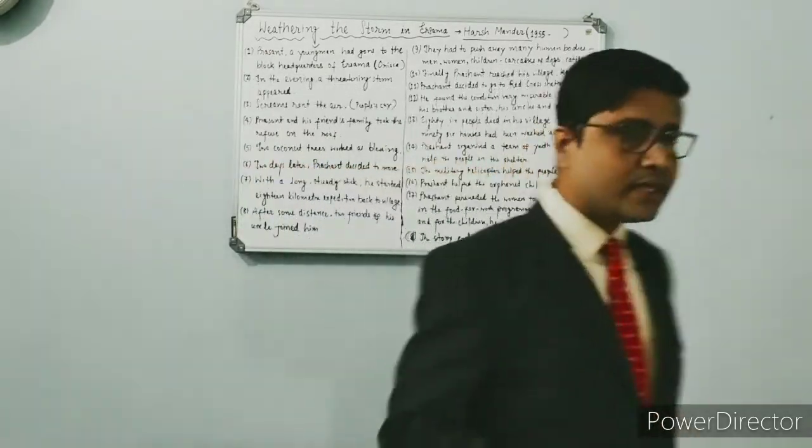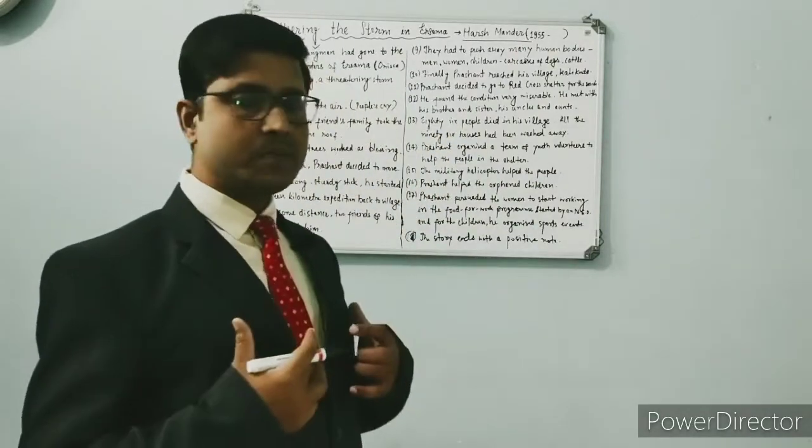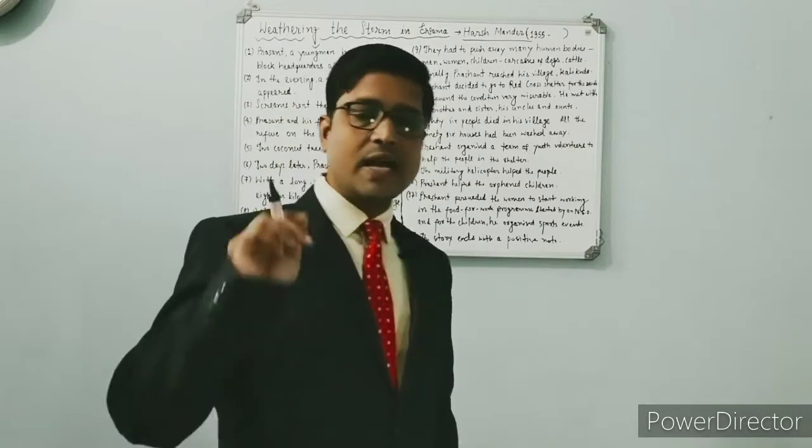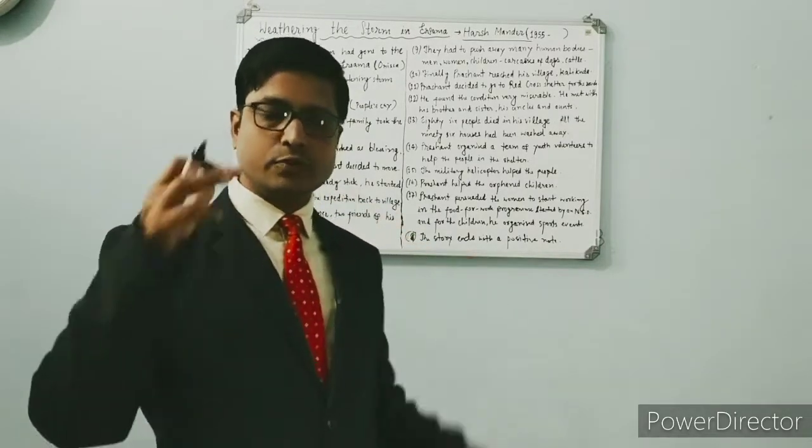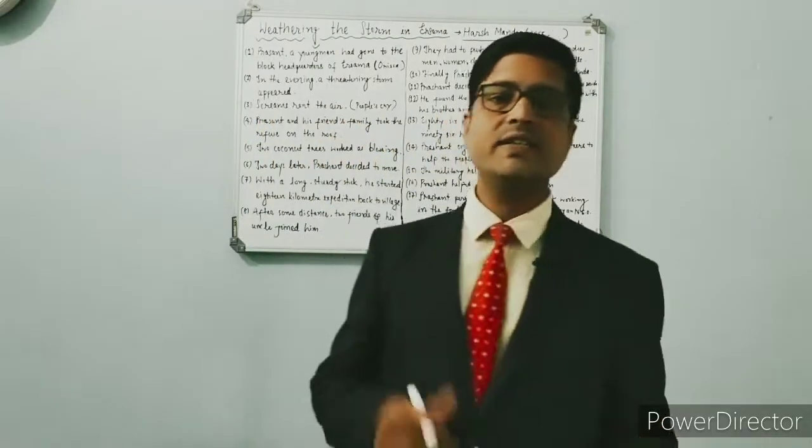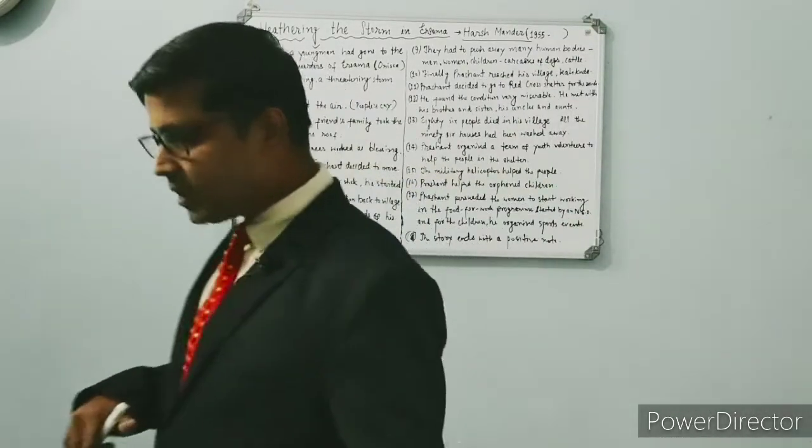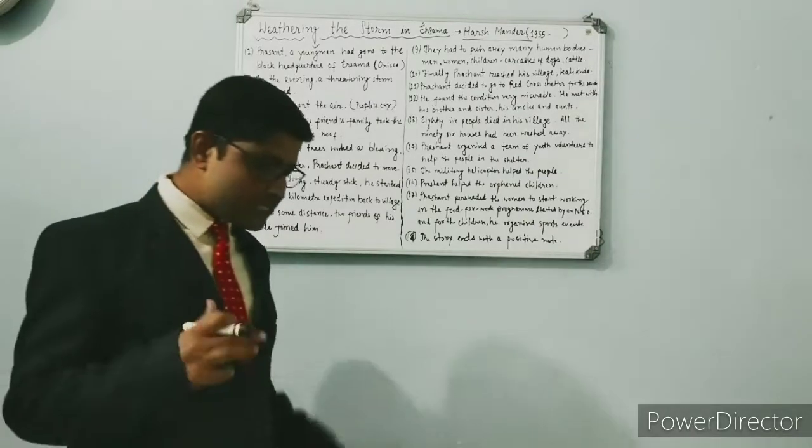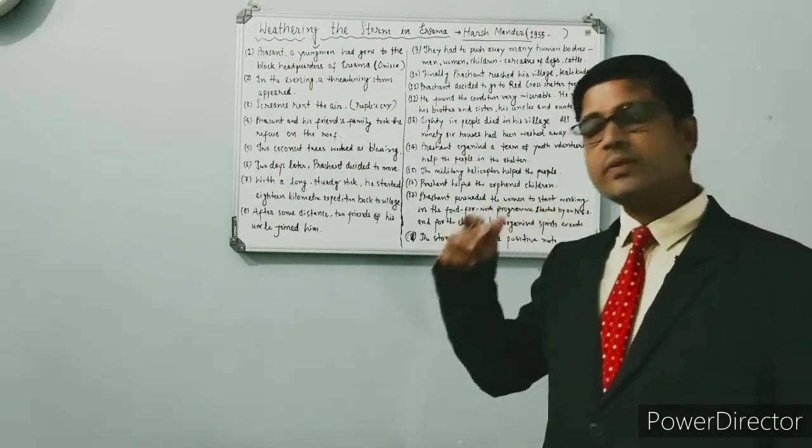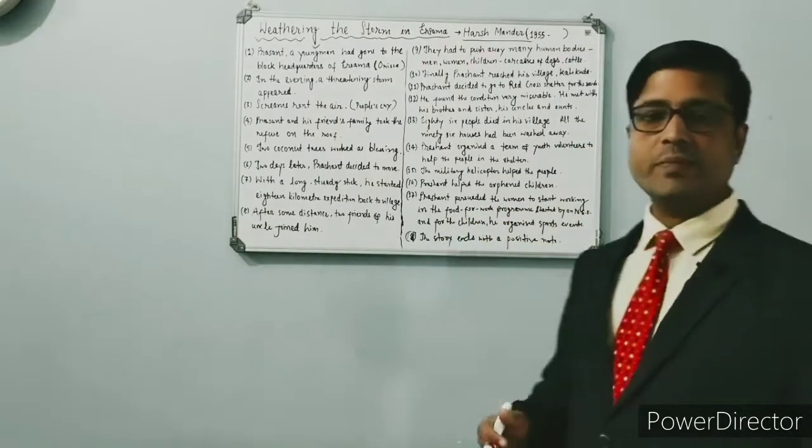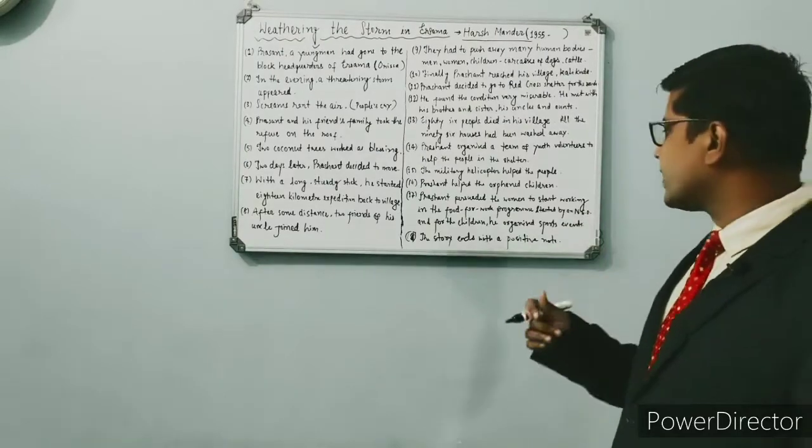Prashant instructed the children to lie down and put utensils on their stomachs so that military helicopters would notice they were hungry and needed food packets. When this happened, the helicopters sent food packets for them. Prashant also helped children whose mothers and fathers were missing and could not find their parents, trying to keep them relieved.